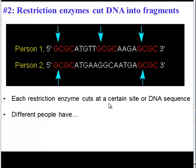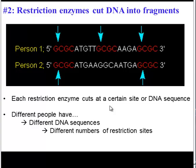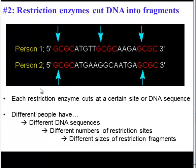This is crucial because different people have different DNA sequences, and thus they have a different number of restriction sites. And thus, the same restriction enzyme will cut different people's DNA into different sizes.